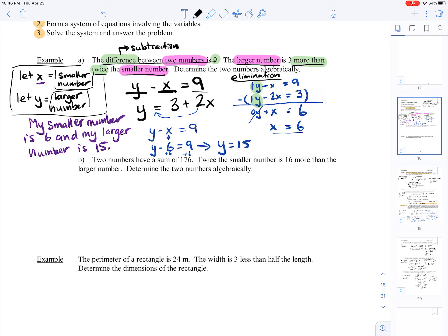Two numbers have a sum of 176. Twice the smaller number is 16 more than the larger number. Determine the two numbers algebraically.